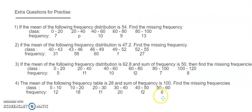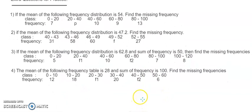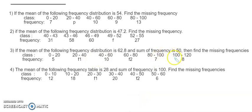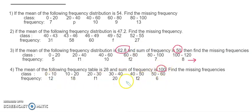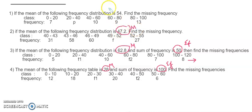Some extra practice questions are provided. In questions 3 and 4, you need to do the same thing. For question 3, the total frequency is given as 50, so set 50 equals F1 plus F2 plus the remaining frequencies from the table — that gives the first equation. Then use the mean for the second equation. Similarly for question 4, the total frequency is 100, so set 100 equal to the sum of frequencies from the table for the first equation, then apply the mean formula.